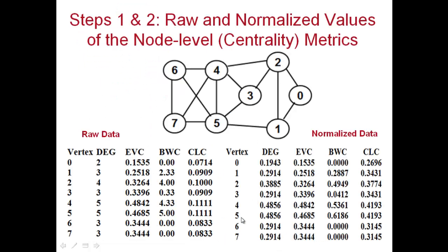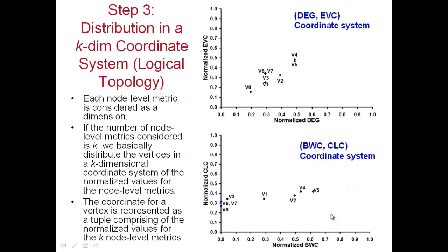Checking the data: vertex 0 has normalized values 0.1943 and 0.1535, and vertices 4 and 5 have values 0.4856 and 0.4842, and 0.4856 and 0.4685. In the degree-eigenvector centrality coordinate system, vertices are closer to each other, whereas in the betweenness-closeness coordinate system they are further apart. This means the network level similarity index will be larger for the degree-eigenvector centrality system compared to the betweenness-closeness system.